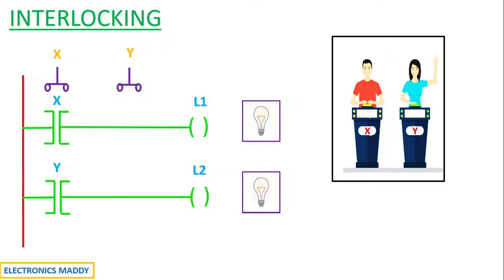But a quiz doesn't happen this way. A quiz usually happens in a way where if a person knows the answer, he will first press the push-button switch, and if the second person presses after the first person, he will not be eligible to answer. So what I am trying to achieve is: if the first person presses the push-button switch, even if the second person presses, the light should not be glowing for the second person.